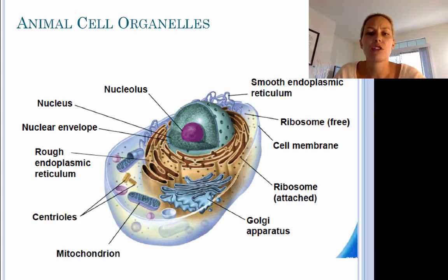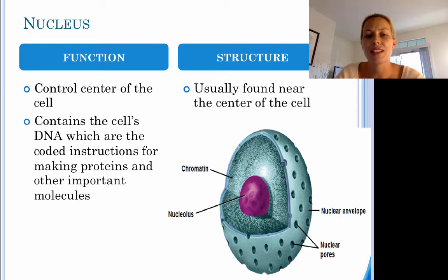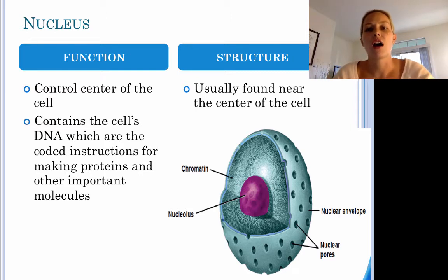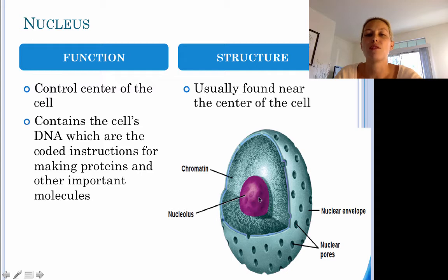Let's take a closer look at each one of these organelles. The nucleus is the control center of the cell. It contains the cell's DNA, which carries the code for the production of proteins. It is housed within a nuclear membrane responsible for protecting the DNA of the cell. In the center of the nucleus, we have the nucleolus, which is responsible for the production of ribosomes.